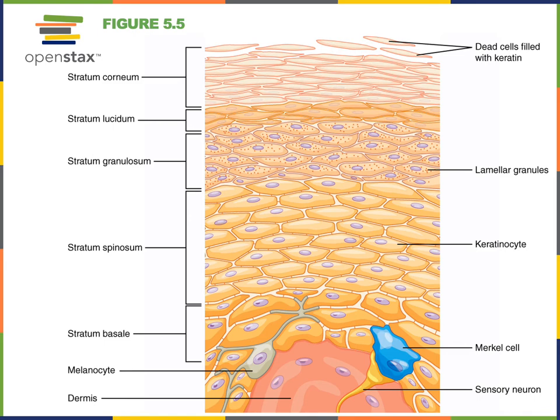Stratum granulosum is 3 to 4 cells thick and contains cells that are becoming flattened and disintegrating their organelles as they prepare to undergo programmed cell death. Cells are excreting lipid granules that fill the cytoplasm and surround keratin, helping to create a water-resistant barrier in the epidermis. Stratum granulosum can be distinguished by its dark, granular appearance with flattened cells that are starting to undergo cell death.